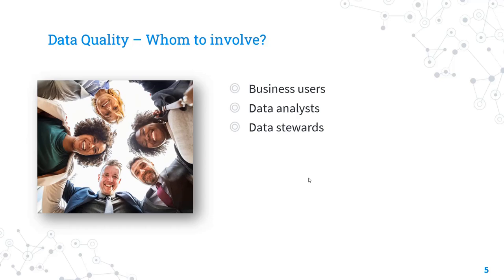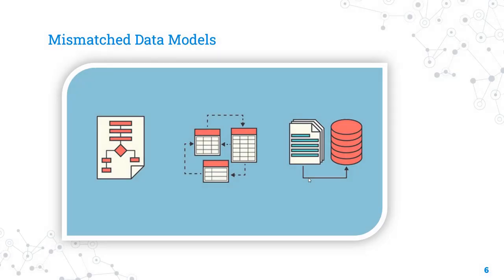The next issue is related to the data model. As we proceed from one step to the next, we may notice different issues. Data modeling is the next step after data quality analysis. During data modeling, one of the critical issues that occurs is the mismatch of data models. This occurs when the data models used in different systems are incompatible with each other, which leads to inconsistency, various errors, and misrepresentation. A mismatched data model can result in inaccurate analysis, poor decision making, and ultimately a decrease in the effectiveness of the MDM system.